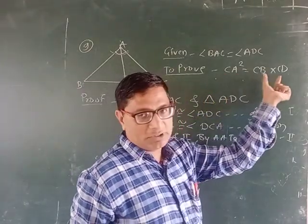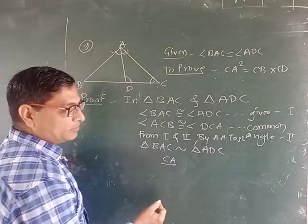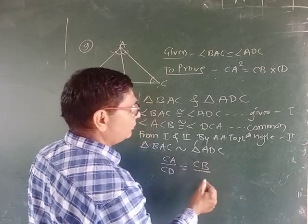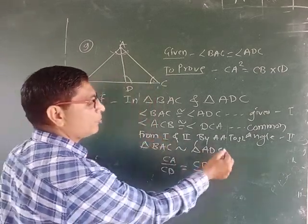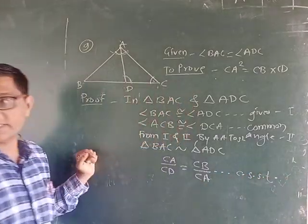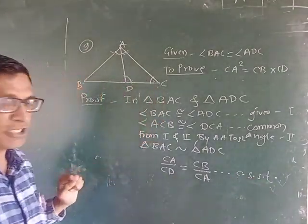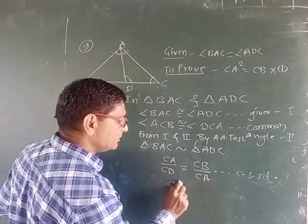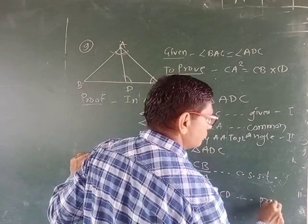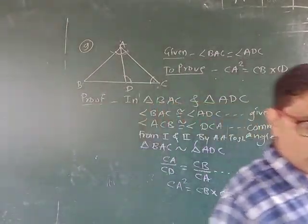Now look at the segment names. CA upon CD is equal to CB upon CA. Reason: CSST, corresponding sides of similar triangles. Now cross multiplication: CA into CA, CA square is equal to CB into CD. CA square is equal to CB into CD. Here we conclude the video.